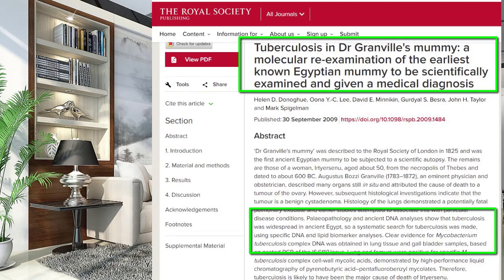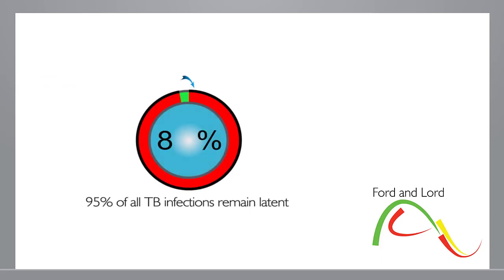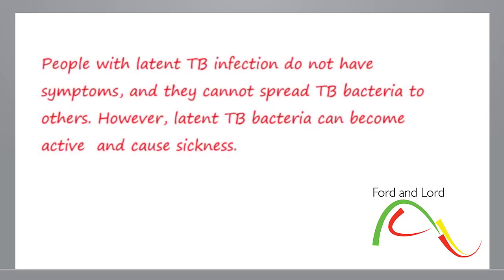Millions of people around the globe are infected with TB. However, only 5% of infected people develop active tuberculosis. The term latent TB is used for cases where the infection remains dormant. The disease is second to AIDS in causing high mortality rates from a single infection in the modern era.